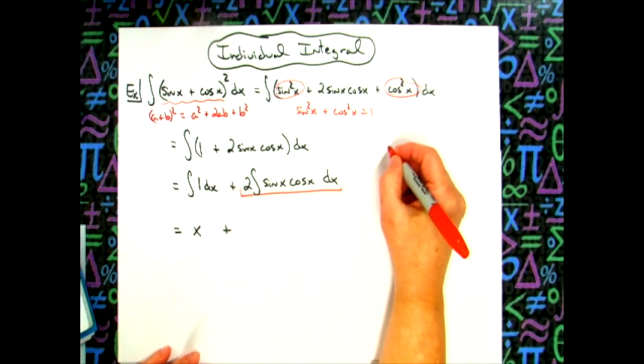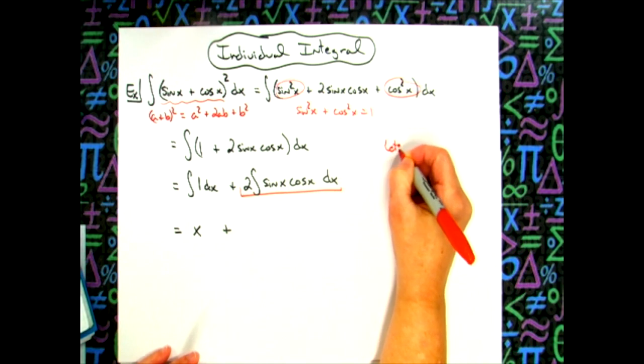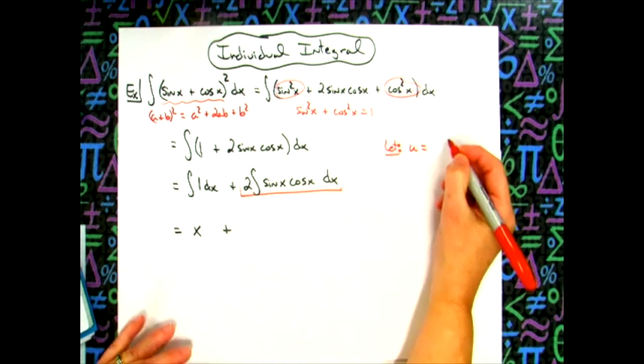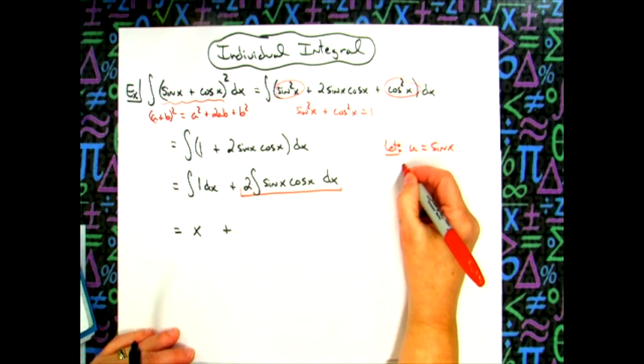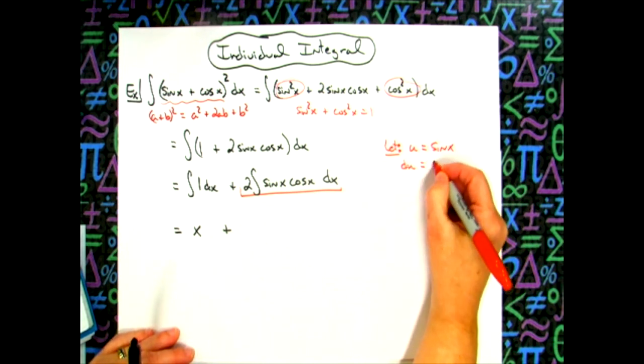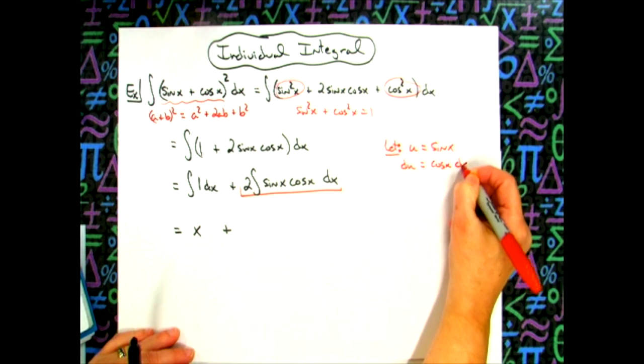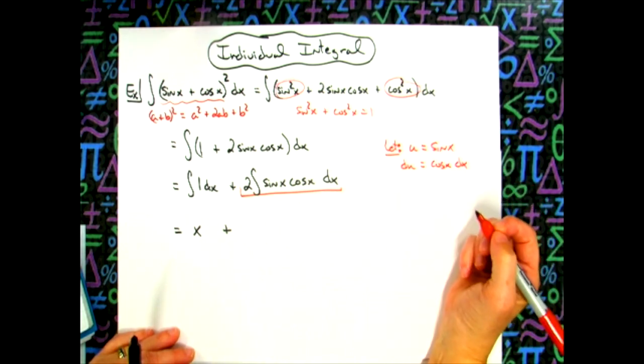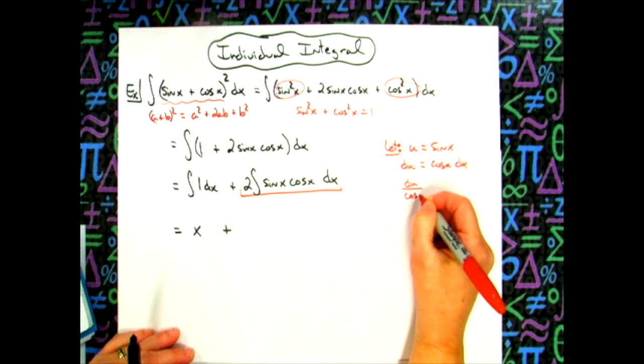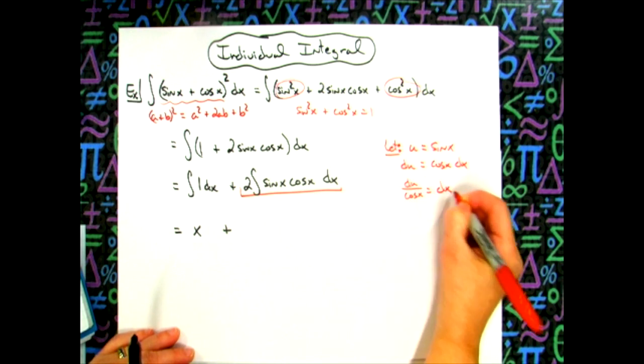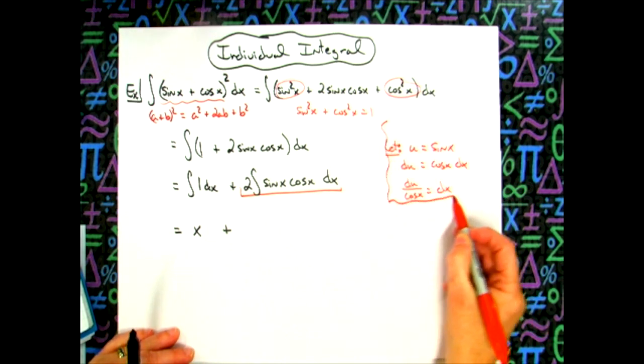So for this integral right here, we're going to do a u substitution. Let's put that over here. Let's say our let u equal sine x. We'll take the derivative of both sides, so we'll have du is equal to cosine x dx. And then we'll go ahead and solve all the way down for that dx, so we'll have du over cosine x equals dx.